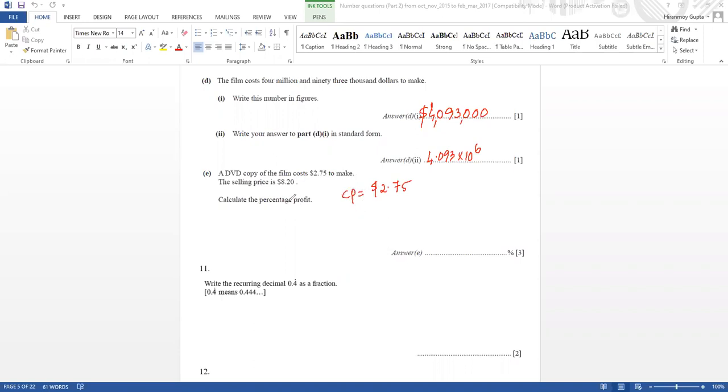The price is $8.20, so what is the profit percentage? 8.2 minus 2.75 divided by 2.75 times 100. How much is it coming? 5.45 by 2.75 into 100, so the percentage profit is 198.18%.